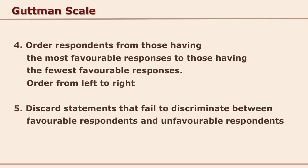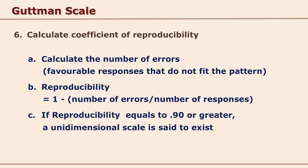Then we calculate the coefficient of reproducibility. First, you calculate the number of errors — favorable responses that do not fit the pattern. The coefficient of reproducibility equals 1 minus the number of errors divided by the total number of responses. This gives a value similar to a coefficient of correlation, always less than 1. If the coefficient of reproducibility equals 0.9 or greater, a unidimensional scale is said to exist and you can accept it.